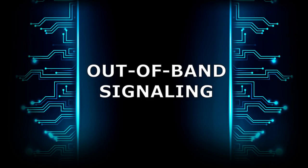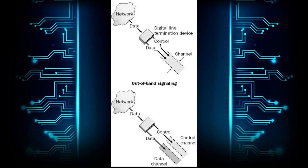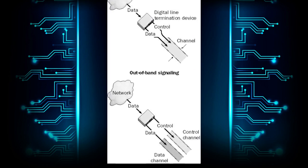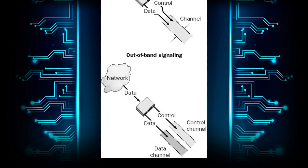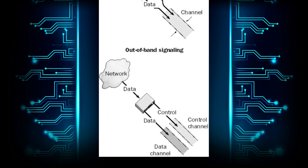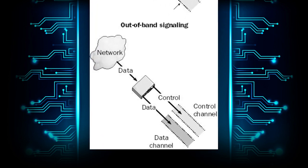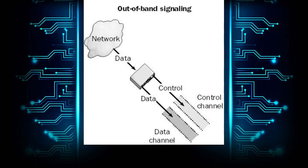Out-of-band signaling is any transmission technology in which signaling is separate from the data being transmitted. Out-of-band signaling uses one or more channels for transmitting data or voice information, and one special out-of-band channel for performing signaling functions, such as establishing and terminating the communication link, controlling flow, or transmitting error information.